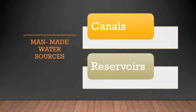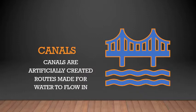Let's learn what canals are. Canals are artificially created routes made for water to flow in. Rivers are far away from the fields where water is required, so water has to flow from the rivers or lakes near the villages to the fields where agricultural work is going on. Water also has to pass through these canals to reach our houses.